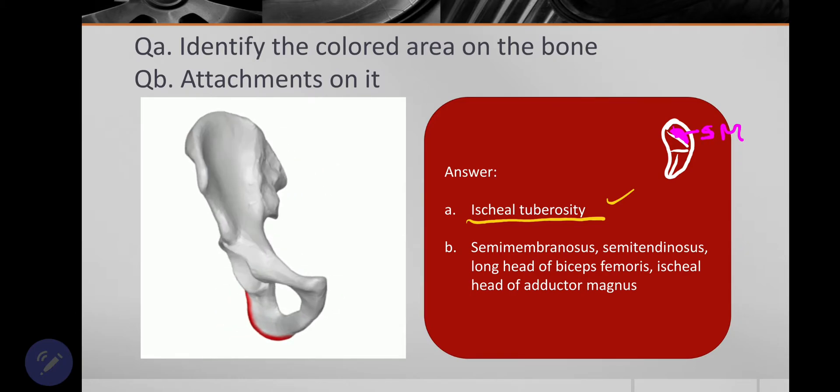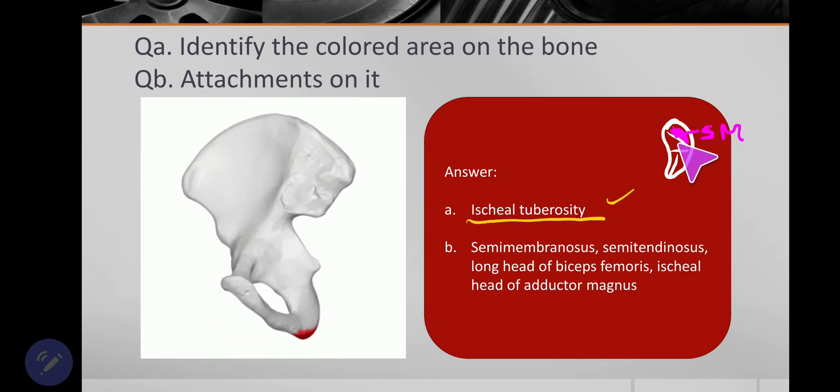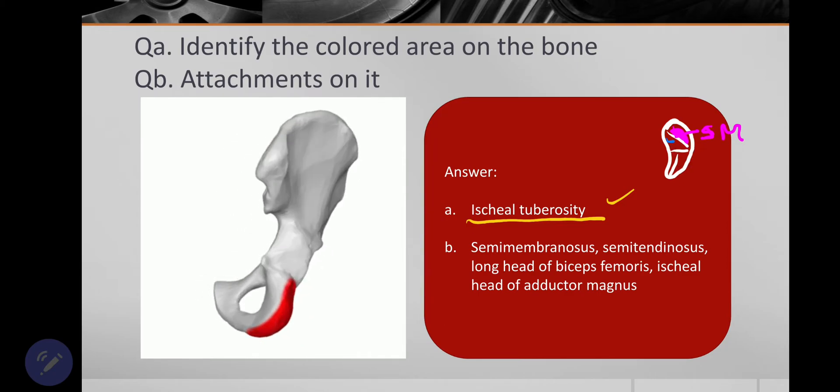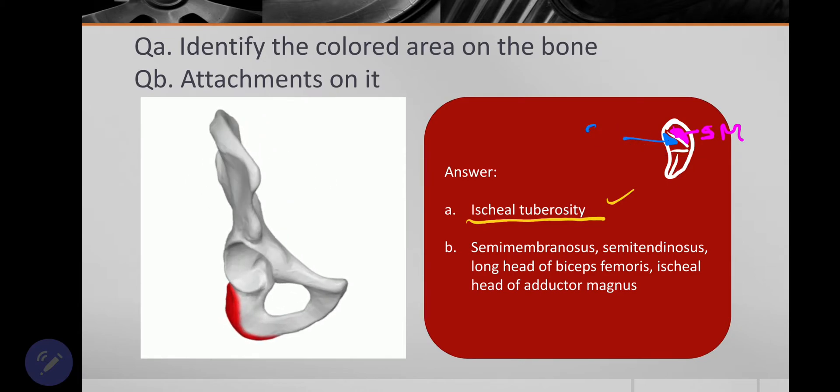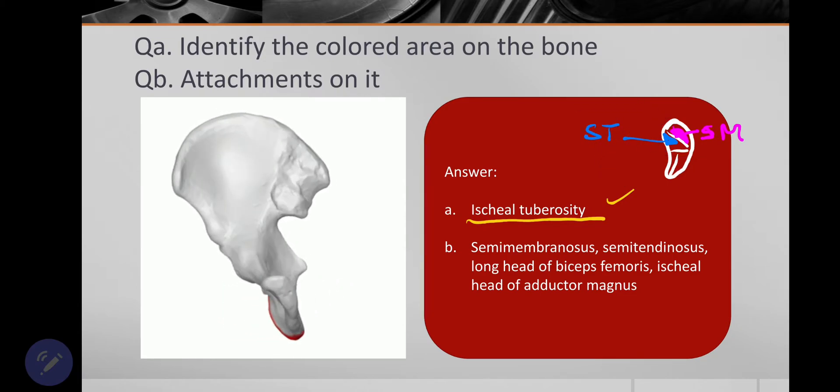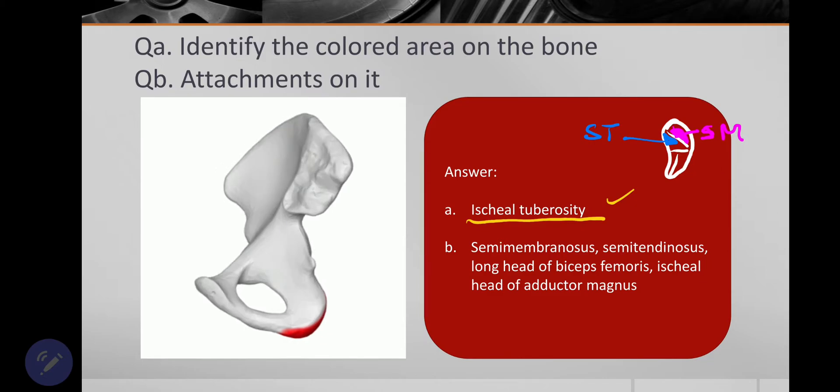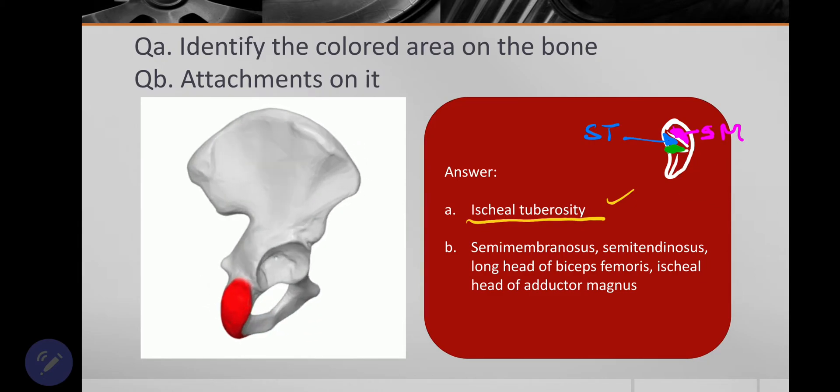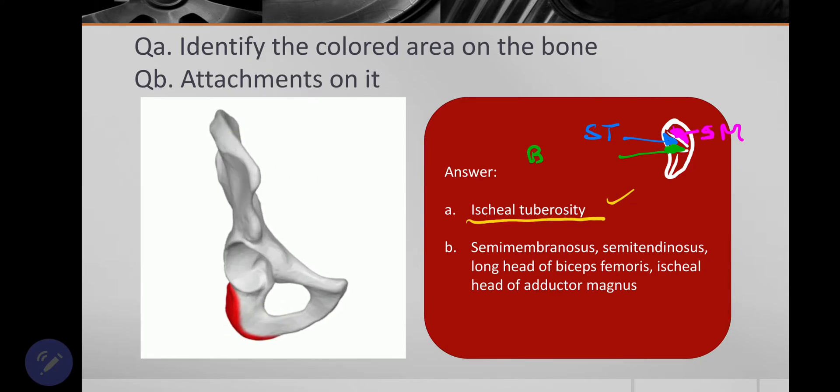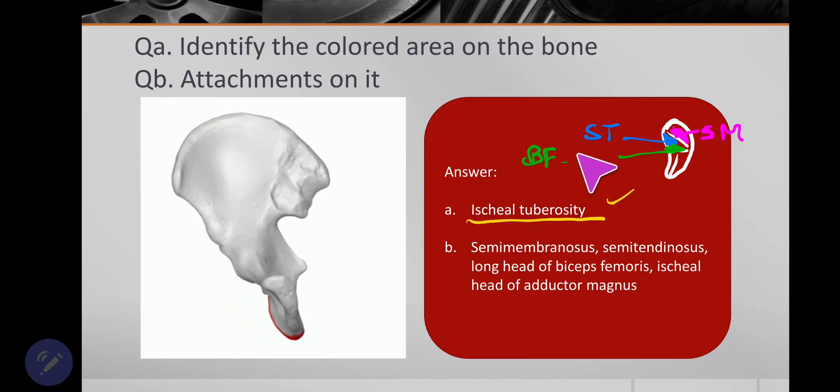Then, on the inner surface, I mean inferomedially, there are actually two muscles that take origin. So this is semitendinosus, as well as another muscle that takes origin here is biceps femoris long head.